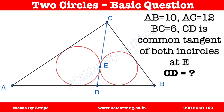Hi, welcome to Math by MEA. This question is about incircles and common tangents. Data given: 10, 12, and 6 for the respective sides. CD is the common tangent to both incircles, at point E, which is a tangential point. We need to find the length of CD.